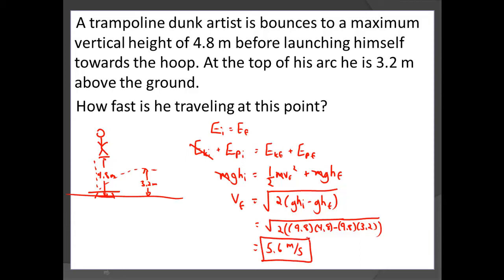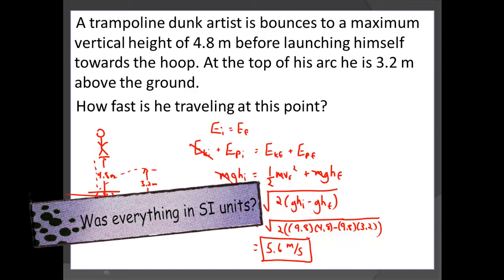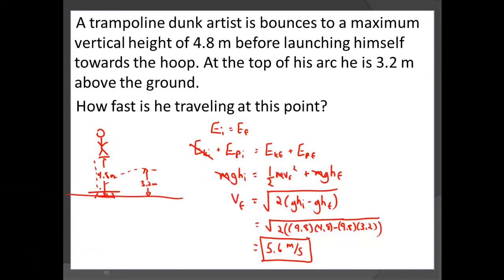So again, we exploited the fact that initially there was all potential, no kinetic, but afterwards there was definitely some of both because there was a height above the ground but we definitely know we were moving. Okay, so again, classic example. Notice that the mass canceled. Big deal. All right, we'll do one more and then I'll set you free.